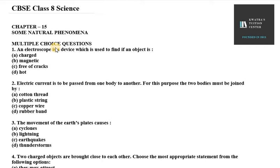So the first one is: an electroscope is a device which is used to find if an object is charged, magnetic, free of cracks, or hot. So what is the use of electroscope? To check whether the object has charge on it or not. So let's check - it is charged or not.